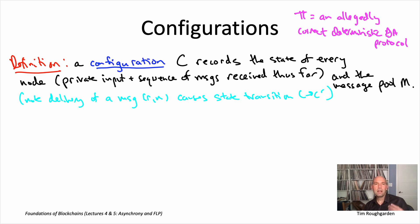So in a little more detail, when a message gets delivered to its intended recipient r, the configuration changes in three different ways. First of all, that message that was just delivered is taken out of the message pool, so the message pool drops by one message. Secondly, that message gets added at the end of the sequence of messages that node has received thus far - its local state changes. And then finally, that node may respond by adding one or more messages to the message pool.